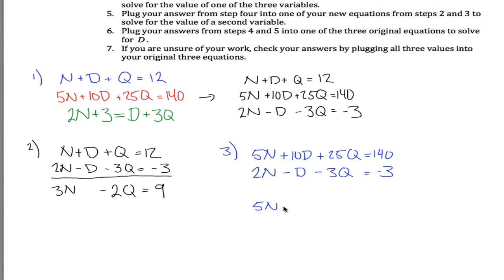What I'm trying to say is I'll leave the top equation here alone, but I'll multiply the bottom equation by 10, everything on both sides of the equation. So instead of 2N, I got 20N, and instead of negative 1D, I got negative 10D. And instead of negative 3Q, I have negative 30Q.